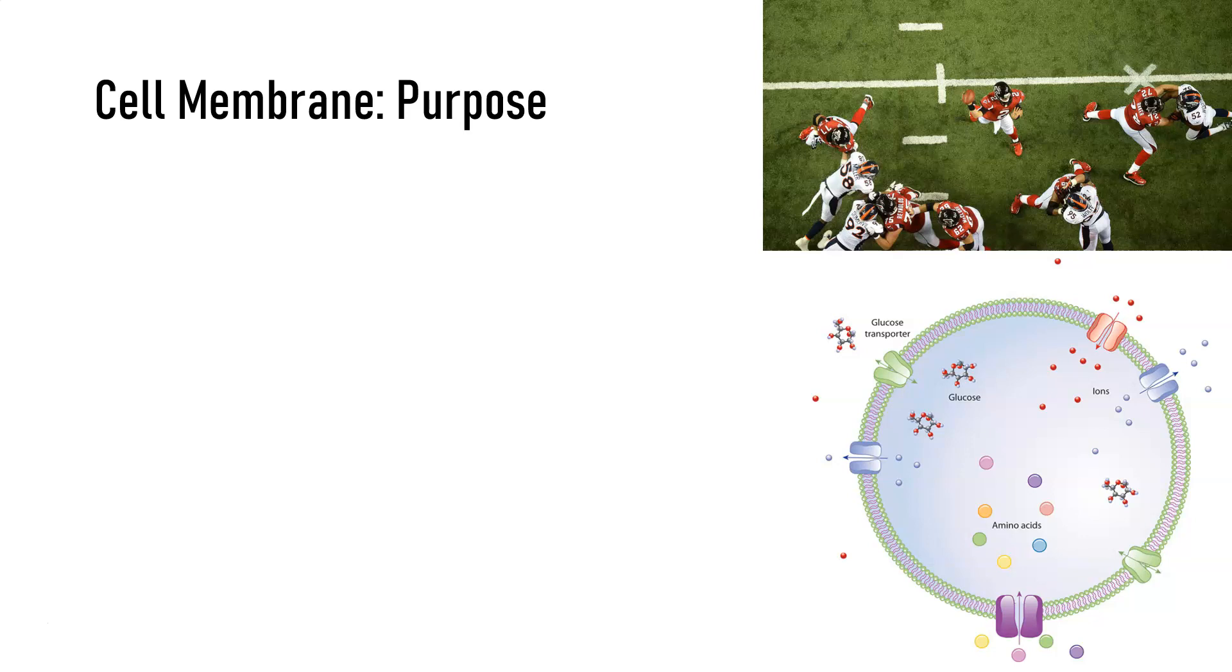Let's first talk about its purpose. When I think about the cell membrane, I like to compare it to the offensive line in football. One of the offensive line's jobs is to protect the quarterback from anyone trying to rush him. In the same way, the first job of the cell membrane is to protect the cell from the outside environment.